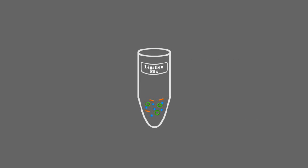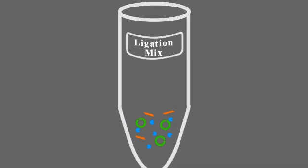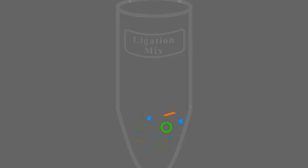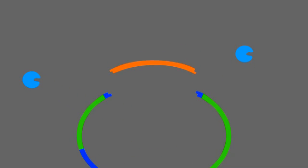Complementary base pairing of single-stranded overhangs brings the ends of vector and insert together, and the DNA ligase fuses them into one intact DNA molecule.